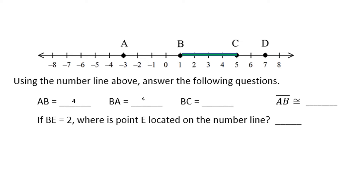For BC, let's count: one, two, three, four. So BC has length four. Since BC and AB have the same length, their segments are considered congruent, so segment AB is congruent to segment BC.